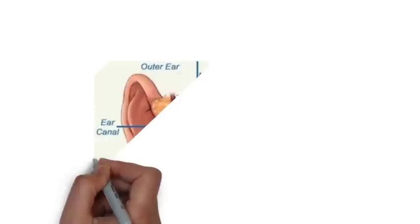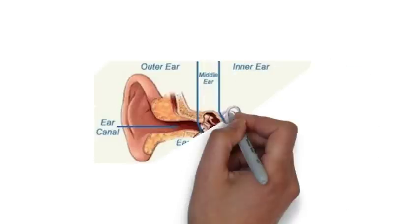The human ear consists of three main parts, namely outer ear, middle ear, and inner ear.